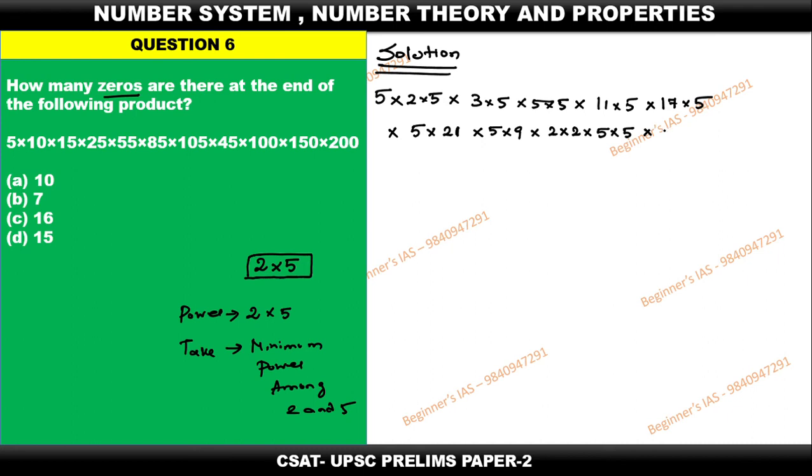Then 150 can be expressed as 15 into 10. That 15 can be expressed as 3 into 5, and 10 can be expressed as 5 into 2. Then 200 can be expressed as 2 into 100. That 100 can be expressed as 4 into 25.